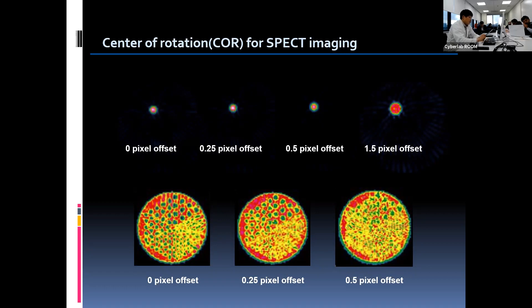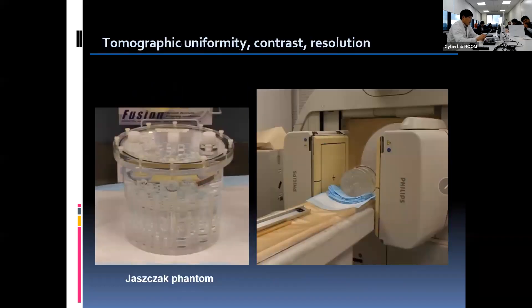COR testing is generally required to be completed once a month. And let's move on to the SPECT phantom study. We especially perform cylindrical tomographic phantom tests to check the performance characteristics of the SPECT imaging system, such as tomographic uniformity, contrast, and resolution.